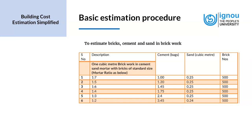How to estimate the bricks, cement and sand in brickwork — for 1 cubic meter of brickwork in cement-sand mortar with bricks of standard size, we have the mortar ratio and the corresponding cement, sand and brick numbers. When the mortar ratio is 1:7, we need 1 cement bag, 0.25 cubic meters of sand and 500 bricks. For 1:5, it is 1.2 cement bags, 0.25 cubic meters of sand and 500 bricks. For 1:6, it is 1.45 cement bags, 0.25 cubic meters of sand and 500 bricks. For 1:4, it is 1.75 cement bags, 0.25 cubic meters of sand and 500 bricks. For 1:3, it is 2.4 cement bags, 0.25 cubic meters of sand and 500 bricks.